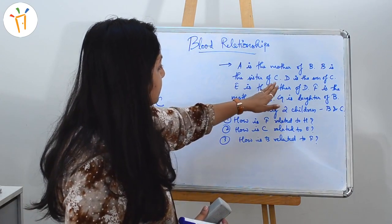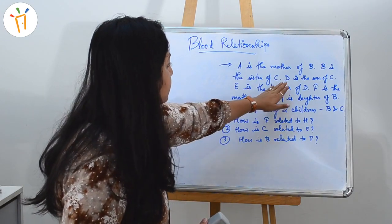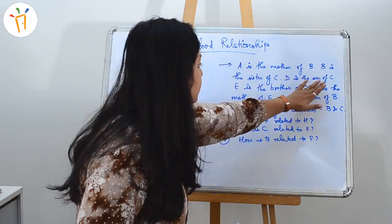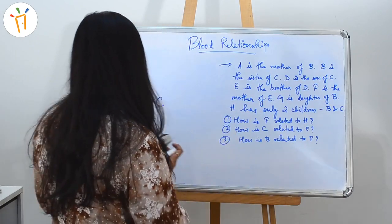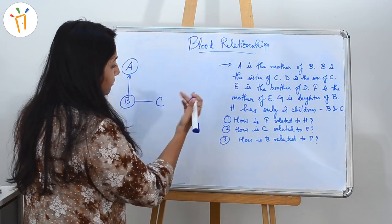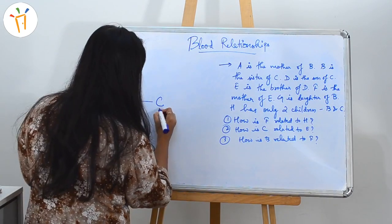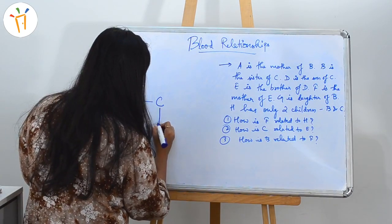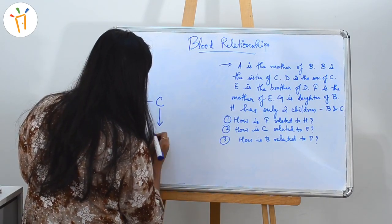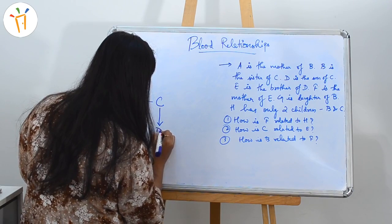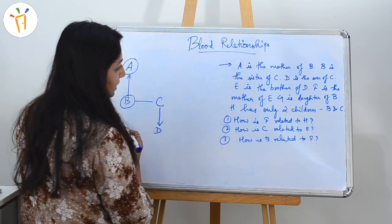The next line is D is the son of C. So, if D is the son of C, we will write D here.